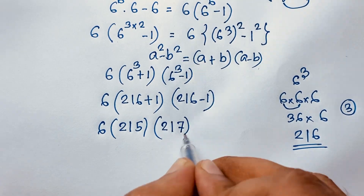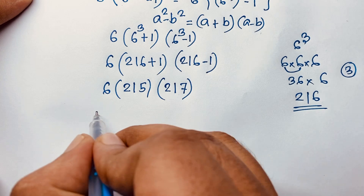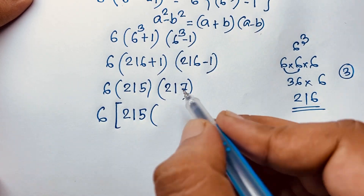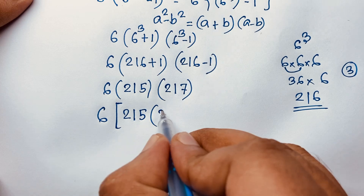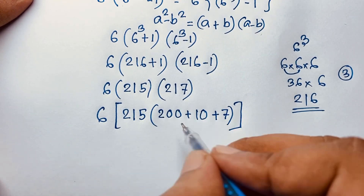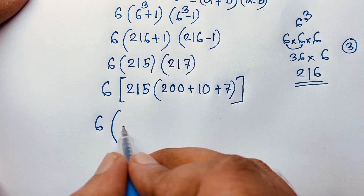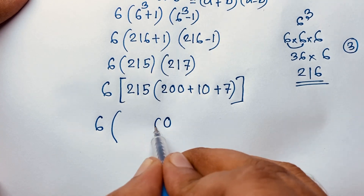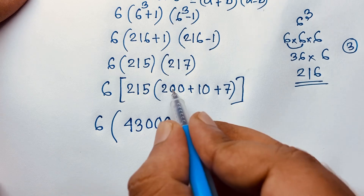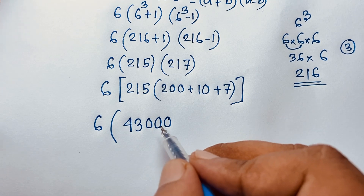So the expression becomes 6 times 215 times 217. We now evaluate this without a calculator. We can write 217 as 200 plus 10 plus 7. First, we compute 200 times 215, which equals 43,000.